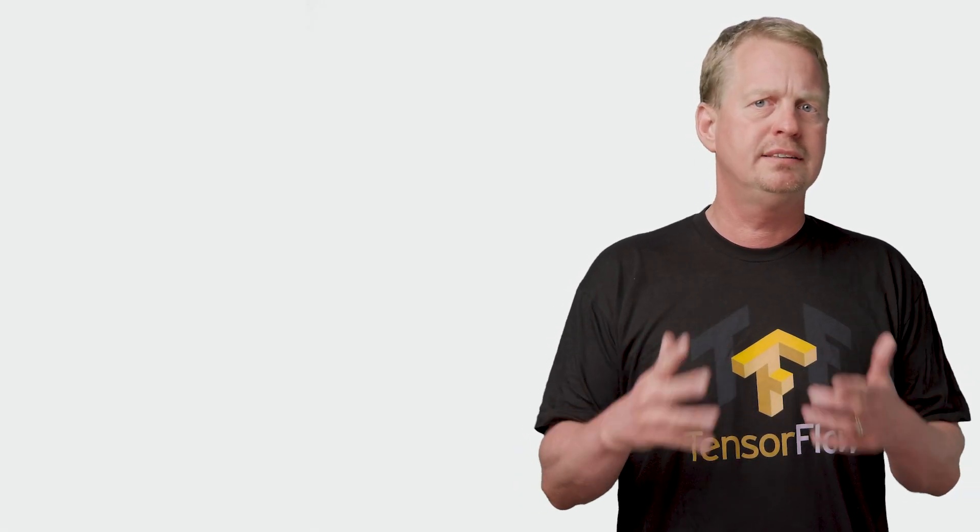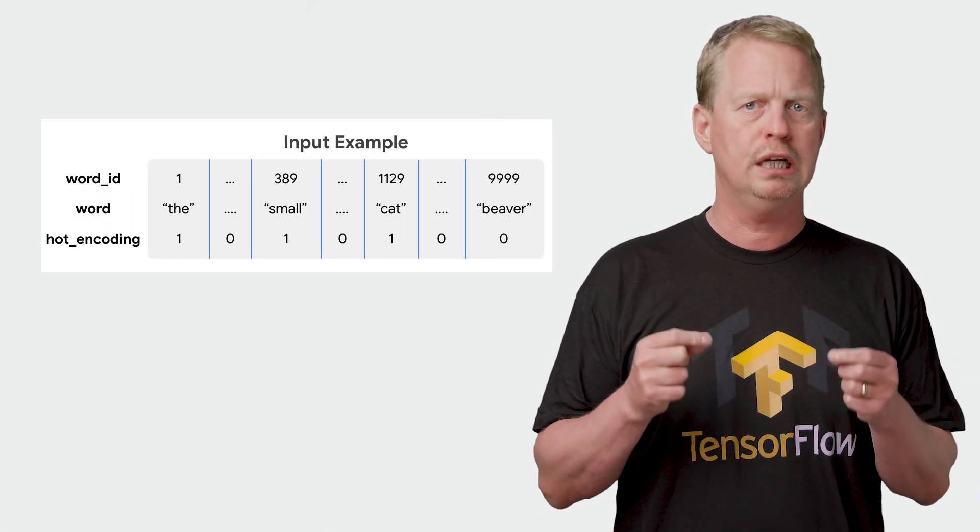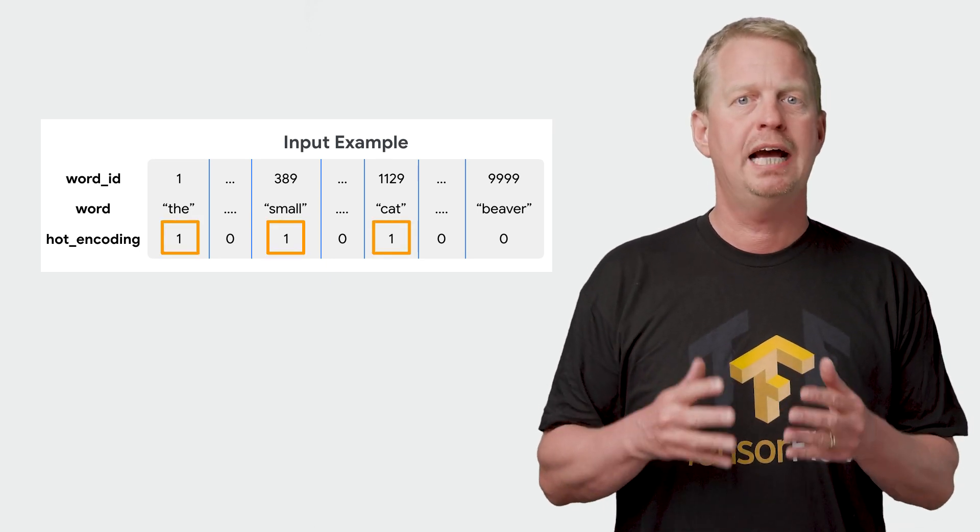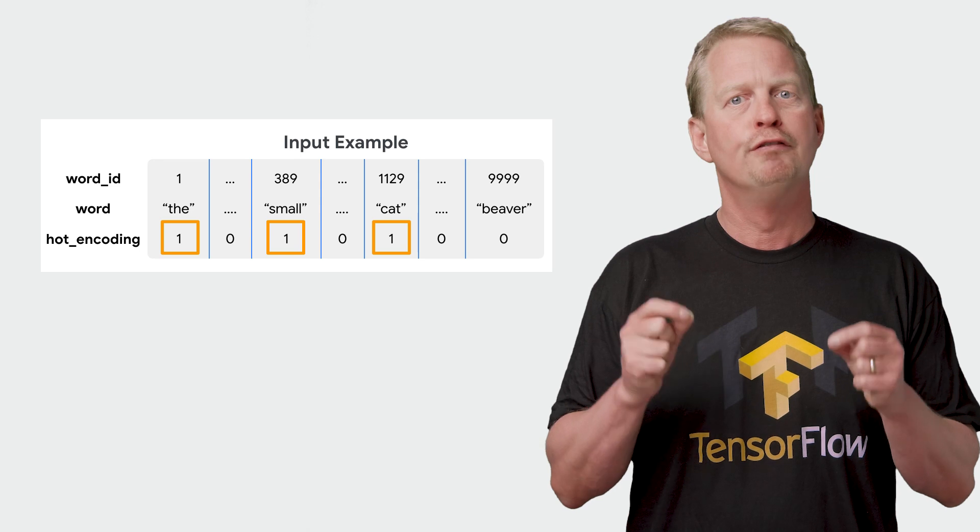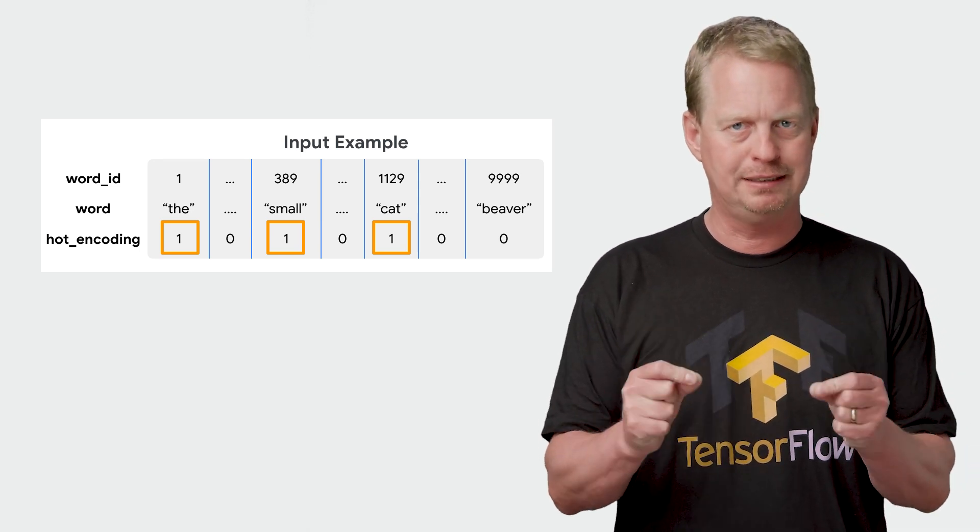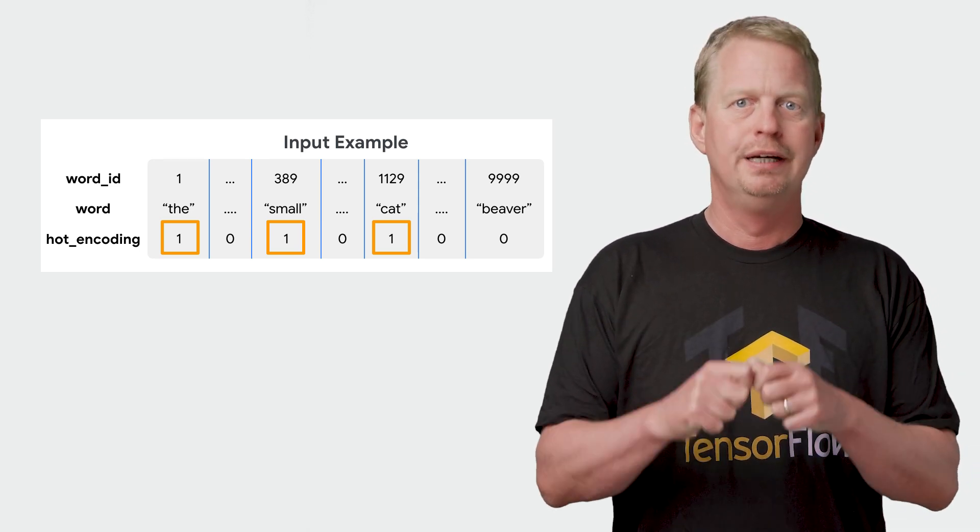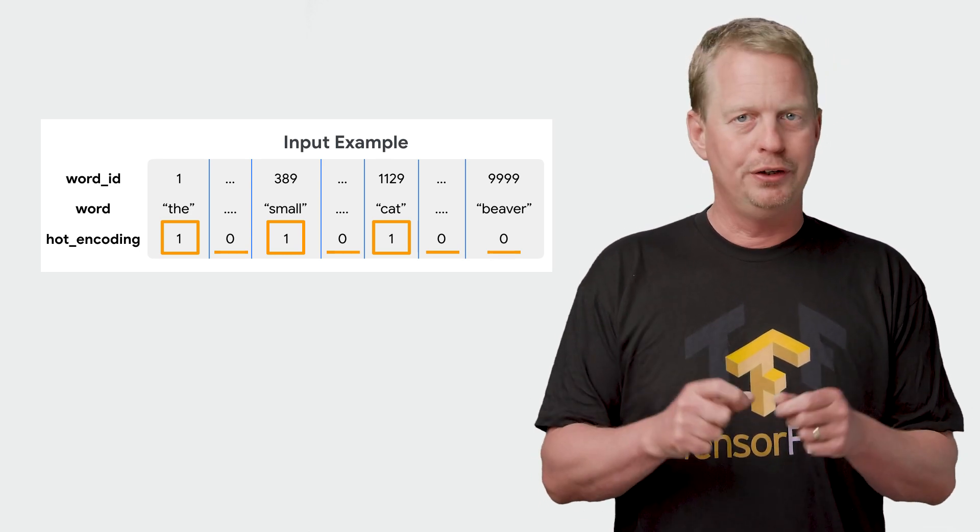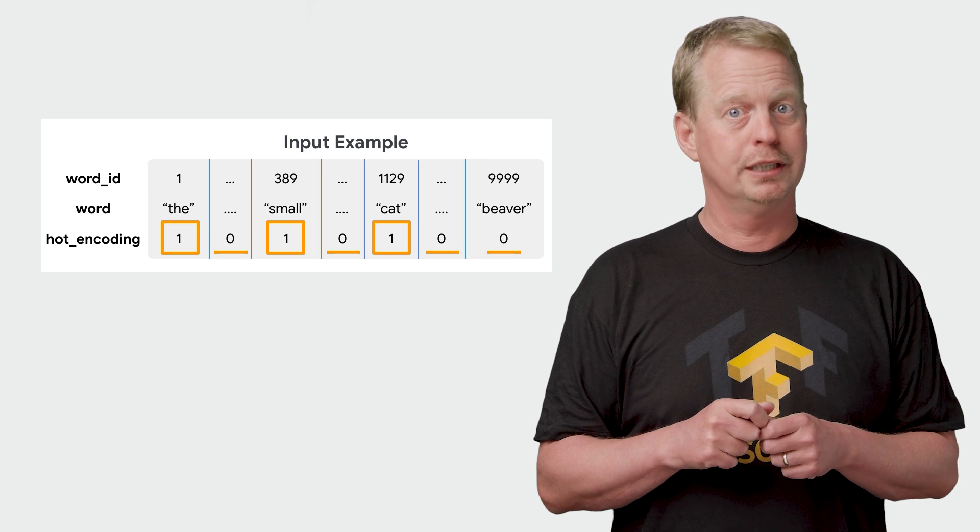Well, let's say we want to feed the model the sentence 'the small cat'. Then we will feed the model with an array which has the value 1 for each word index present in the review, and where all other indexes are set to 0. So now you know why it's called a multi-hot encoding.